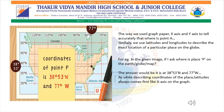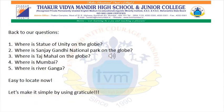Look at this image. Where is point B? It is at 38 degrees 53 minutes north latitude and 77 degrees west longitude. So, coming back to our original questions — where is the Statue of Unity on the globe? The same way, you have to locate Sanjay Gandhi National Park, Taj Mahal, Mumbai, and River Ganga on the globe. Now it is easier for you.